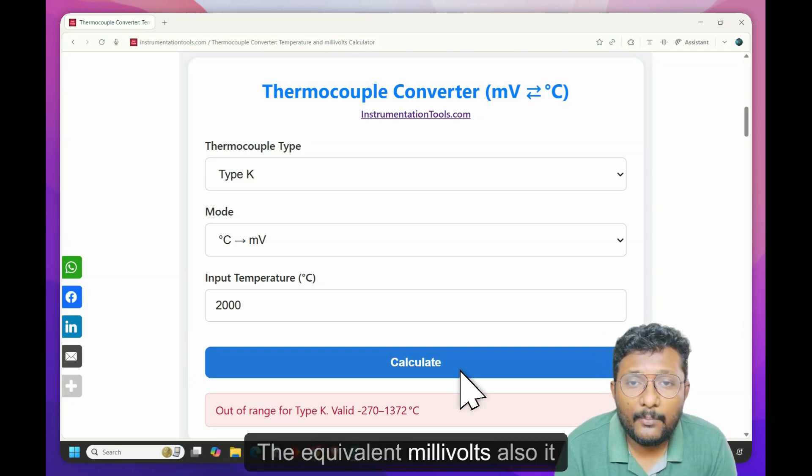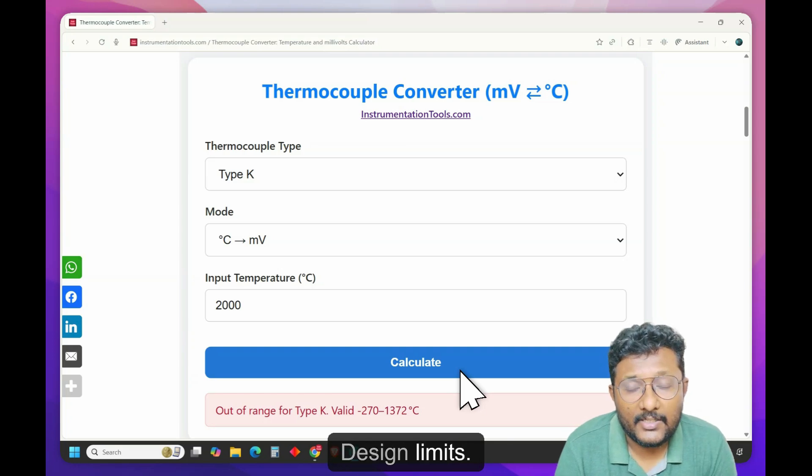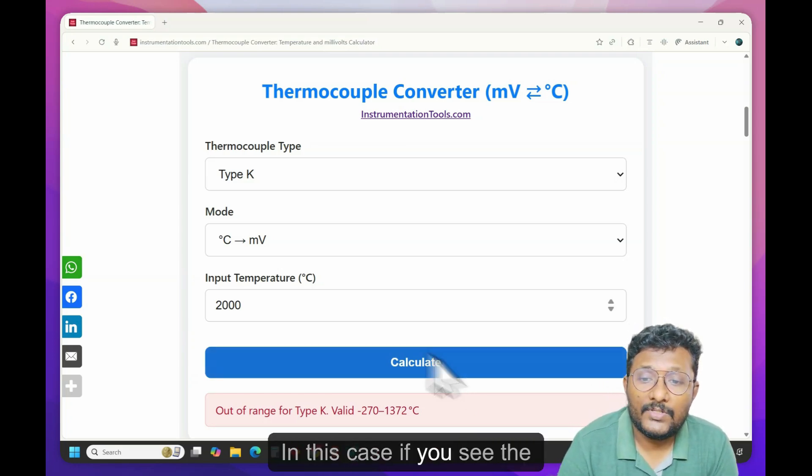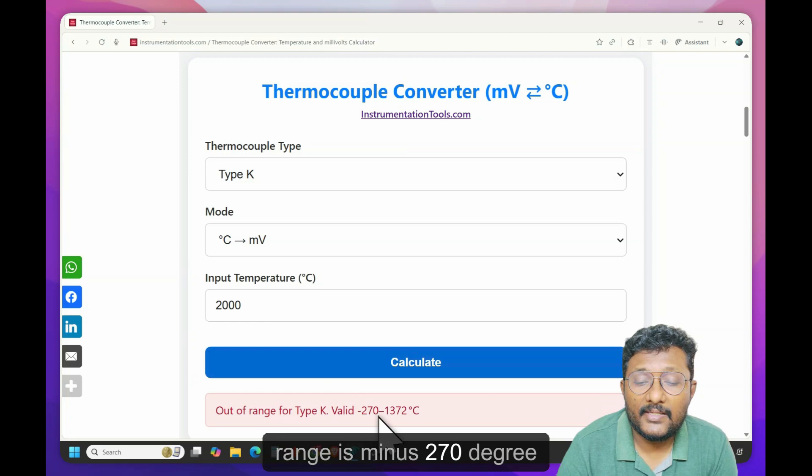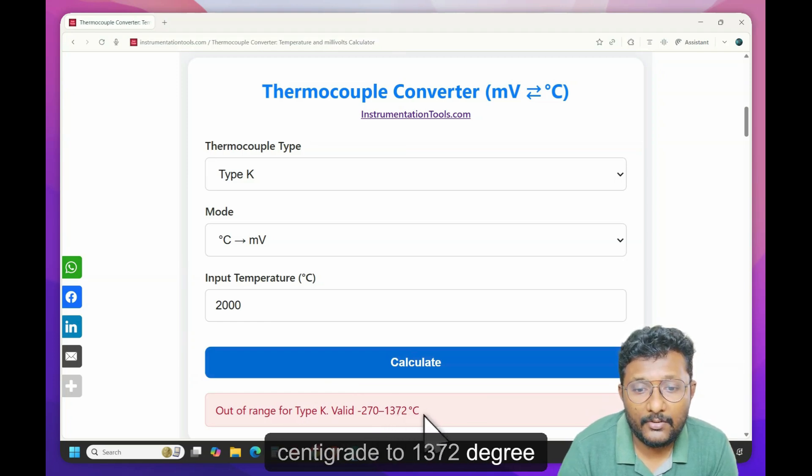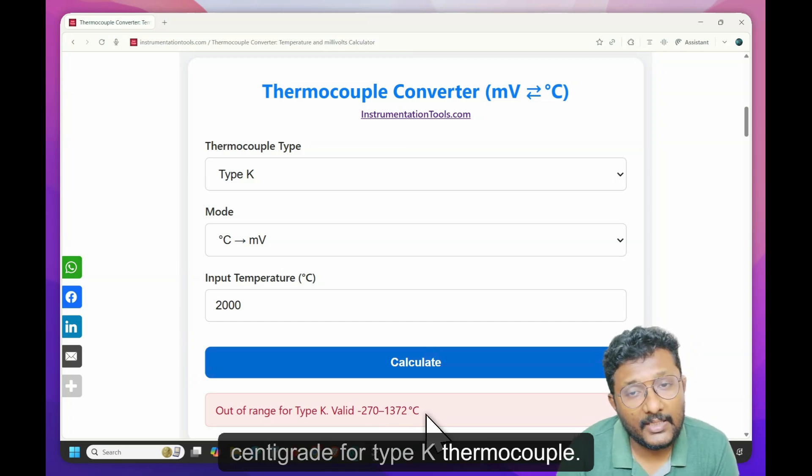So we have fixed temperature scale at the same time. The equivalent millivolts also, it is within the limits, design limits. In this case, if you see, the range is minus 270 degree centigrade to 1372 degree centigrade for type K thermocouple.